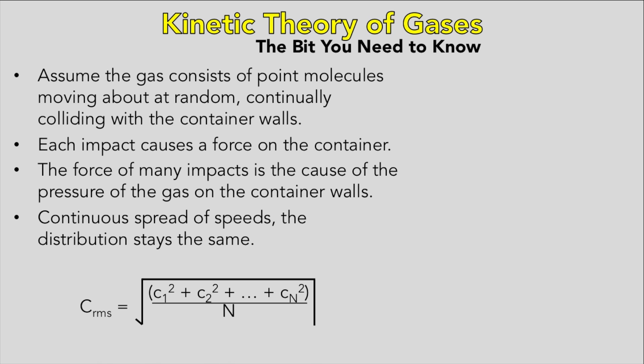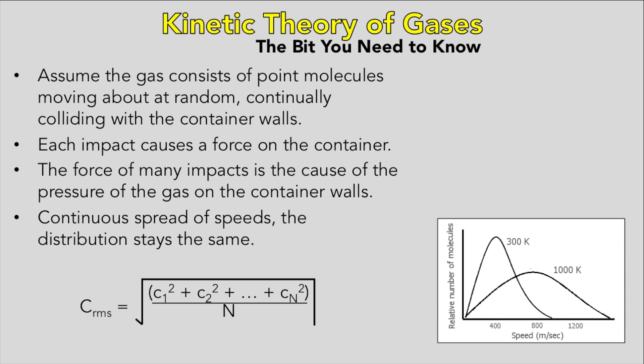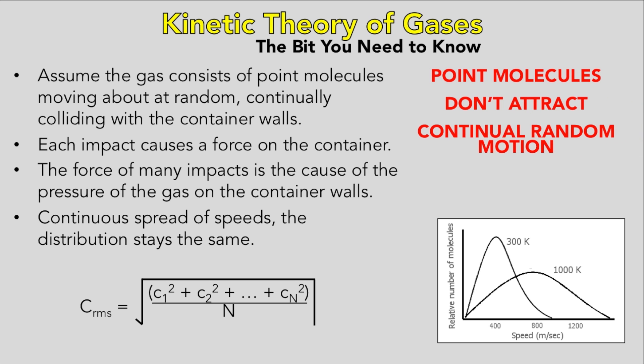The molecules in an ideal gas have a continuous spread of speeds. Individual molecules' speeds change when they collide with other gas molecules, but the distribution stays the same provided there's no temperature change. The root mean square speed of the molecules, where C1, C2, etc., represent the speed of the individual molecules and N is the number of molecules in the gas. If you increase the temperature, the molecules move faster on average, so the root mean square speed increases. The kinetic theory equation for an ideal gas consisting of N identical molecules, each of a mass M, in a container of volume V, has pressure given by PV equals a third NM and then the root mean square speed all squared. To get this equation you have to make several assumptions. One, that the molecules are point molecules, their volume negligible to the volume of the container. Two, they do not attract each other. Three, they move about in continual random motion. Four, any collisions are elastic. And lastly, each collision with the container surface is of much shorter duration than the time between impacts.